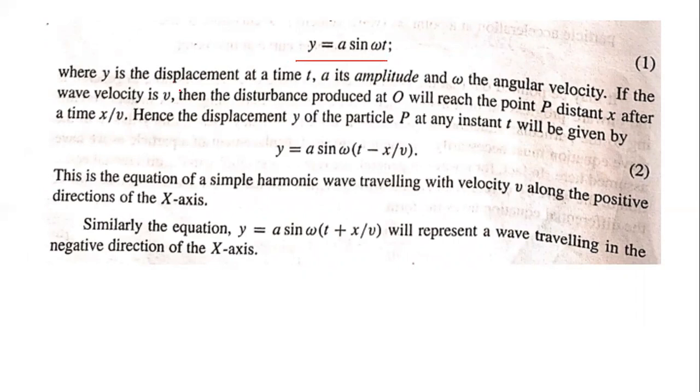Where y is the displacement at a time t, a is the amplitude, and omega is the angular velocity. If the wave velocity is v, then the disturbance produced at O will reach the point at distance x after a time x by v. Hence the displacement y of the particle at any point is given by y equals a sin omega times (t minus x by v).